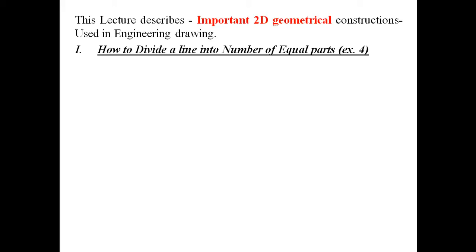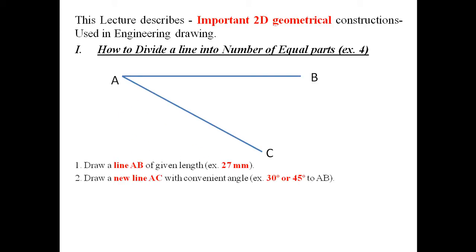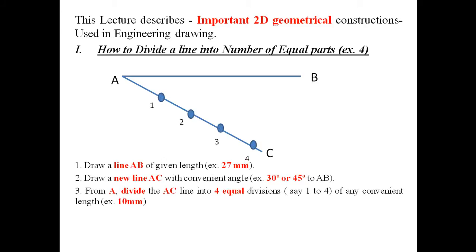The first problem is how to divide a line into a number of equal parts. Here we are going to divide line AB into four equal parts. Draw a line AB of given length 27 mm. Draw a new line AC at a convenient angle of 30 or 45 degrees to AB. From A, divide line AC into four equal divisions of any convenient length, for example 10 mm.